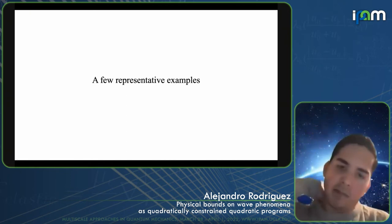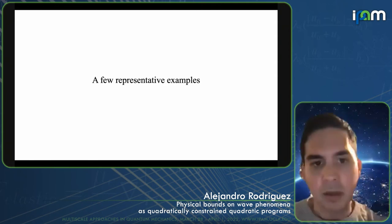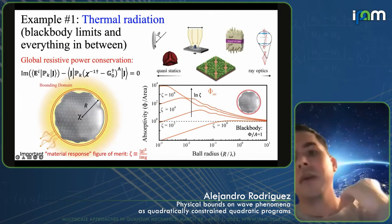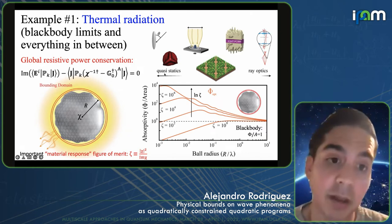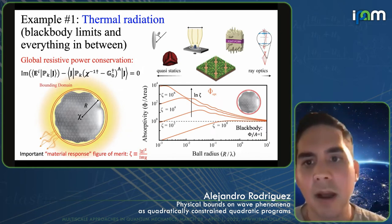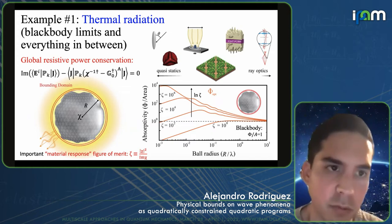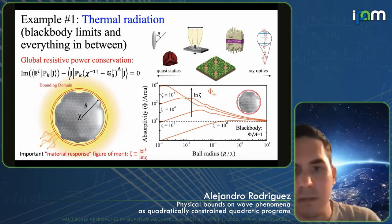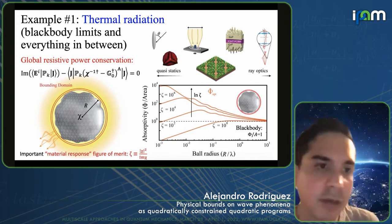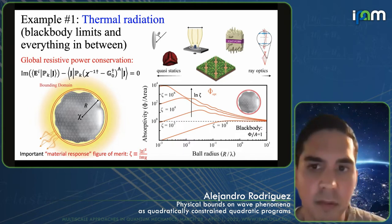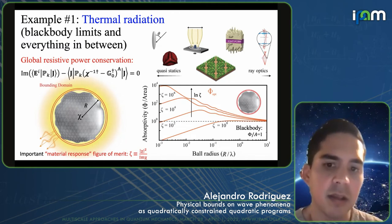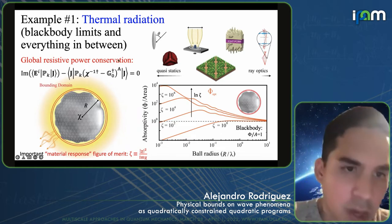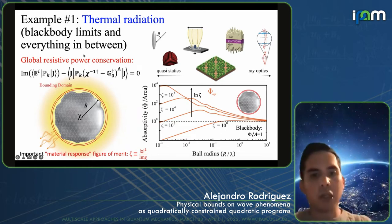Let me go through a few examples. The first example is one that motivated a lot of our work in this area — understanding limits on thermal radiation, going from black body limits all the way down to quasi-statics and the thermal radiation properties of sub-wavelength objects. We applied this technique using just the zeroth-order conservation of power, enforcing only global power conservation as a constraint — only resistive power.